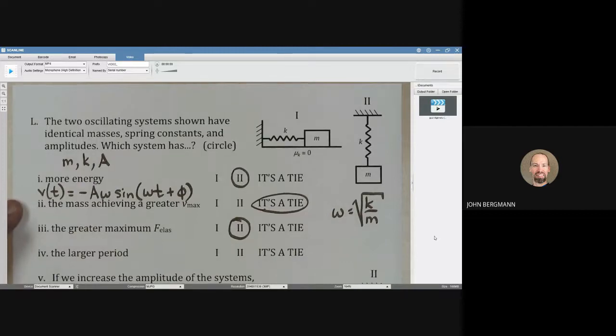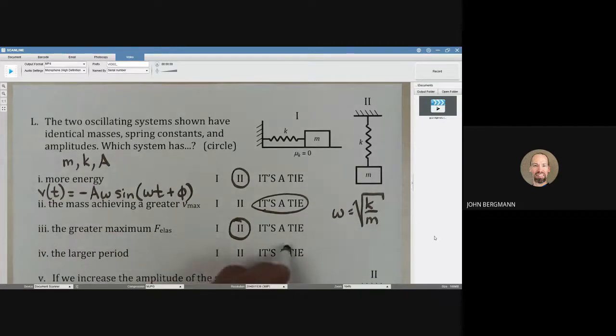And which one will have the larger period? That is going to be a tie. We ran into the equation that omega was 2 pi divided by the period. And if omega is the same for both of these systems, because K and M are the same, then the period will be the same as well.